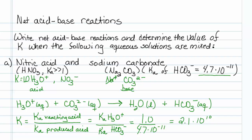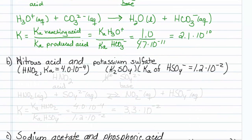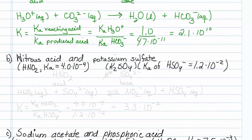Let's try the next one, nitrous acid and potassium sulfate. Nitrous acid is a weak acid, so an aqueous solution of nitrous acid consists mostly of HNO2. An aqueous solution of potassium sulfate consists of potassium ions and sulfate ions.